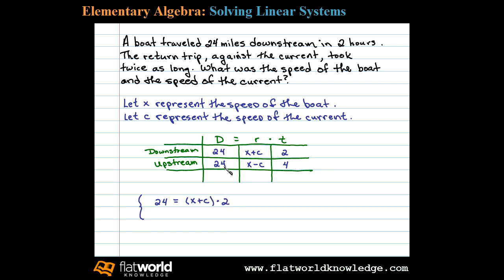The second equation can be gotten from the second row. The distance upstream, 24 miles, was equal to the rate X minus C times four.